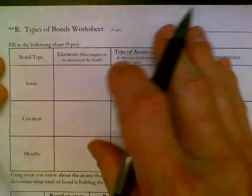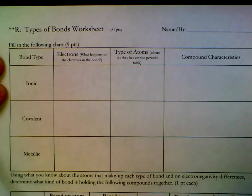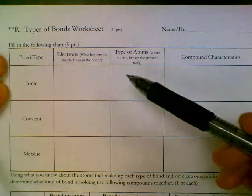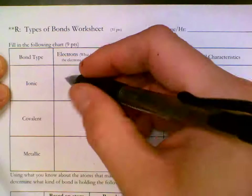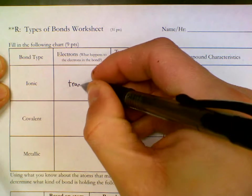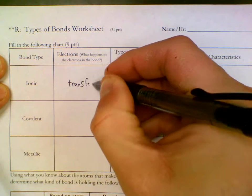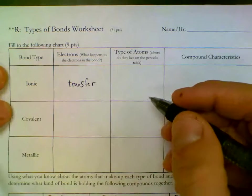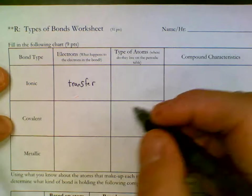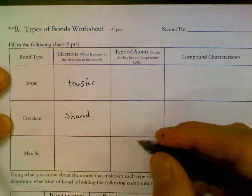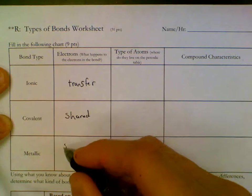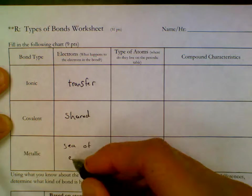And all this information from this table is going to come from our notes that we took in class. So bond type based on electrons here, we need to know that ionic bonds transfer electrons where one atom gains electrons and the other one loses electrons. Covalent are shared electrons, and then metallic we learned as sea of electrons.